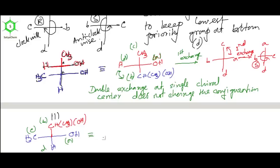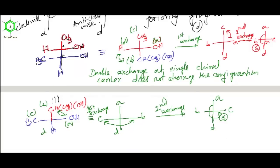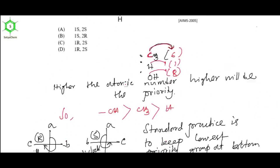Here again, we'll do first exchange between A and B, then second exchange between B and C. As double exchange at a single chiral center doesn't change the configuration, A-B-C is anticlockwise, so it's S. Both chiral centers have S configuration, so option A is correct.